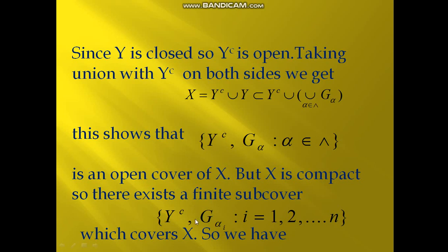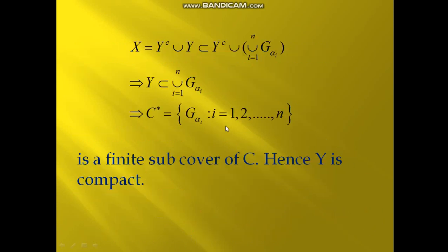X satisfies the compactness property that every open cover has a finite subcover. Let {Y complement, G_α_i : i = 1 to n} cover X. So X = Y complement ∪ (union i=1 to n of G_α_i), and Y is a subset of Y complement ∪ (union i=1 to n of G_α_i).